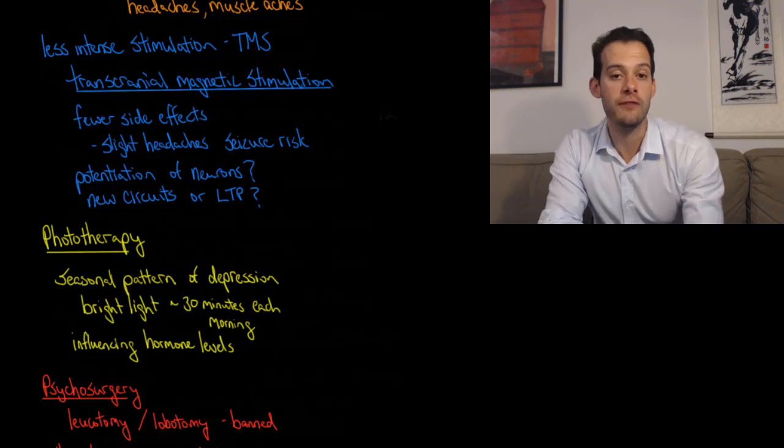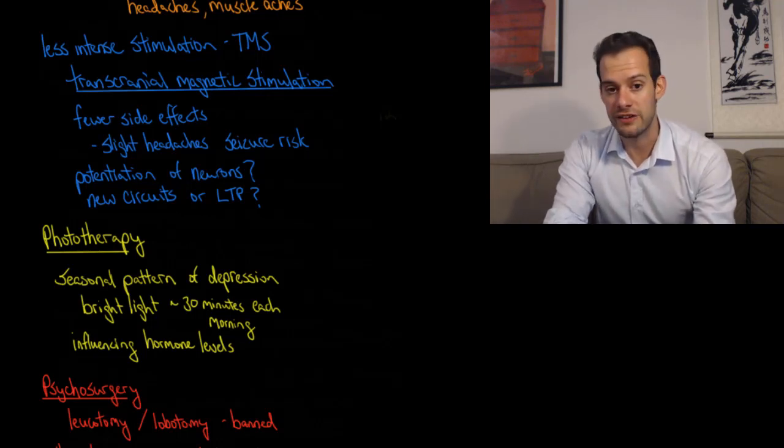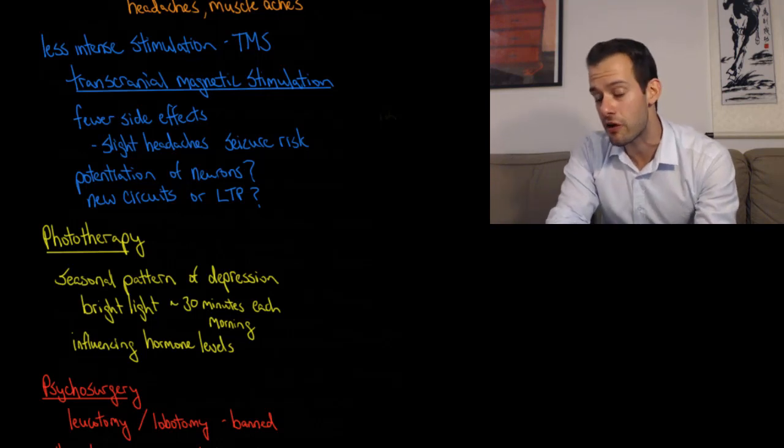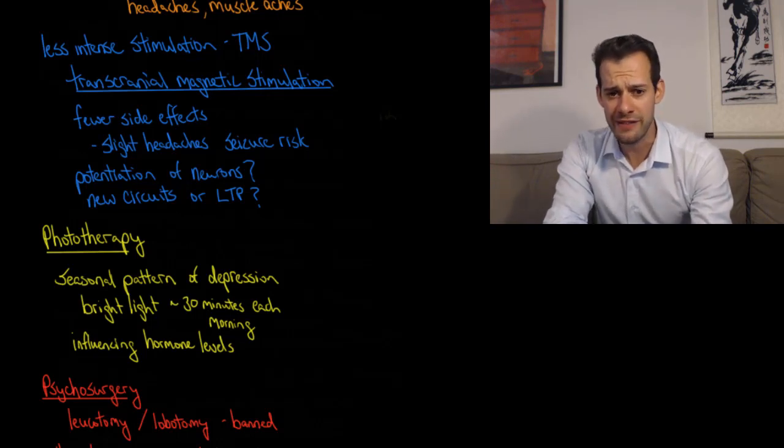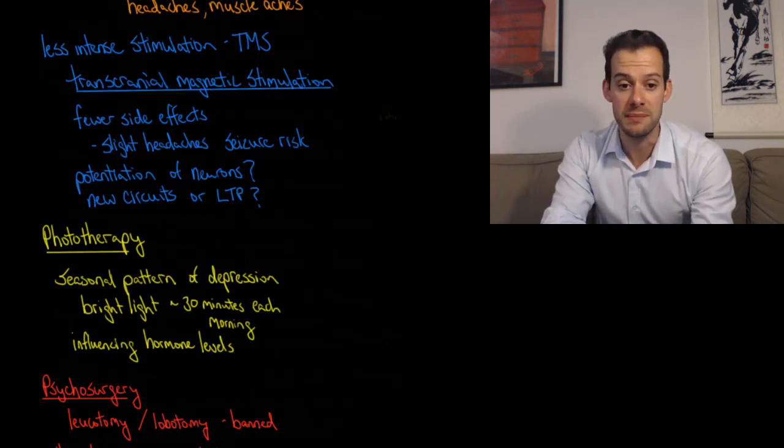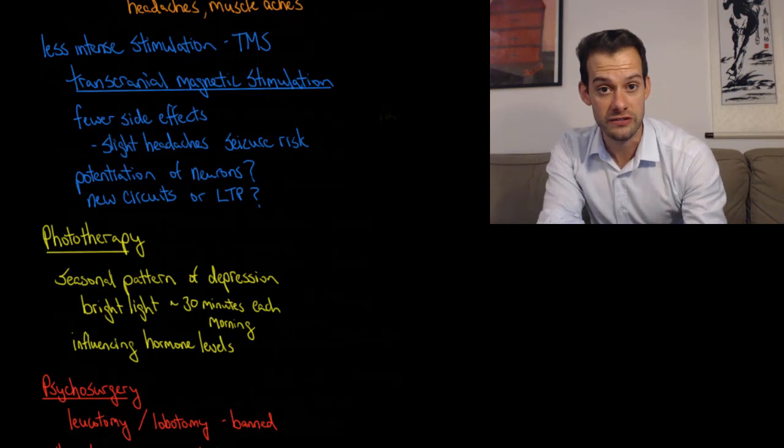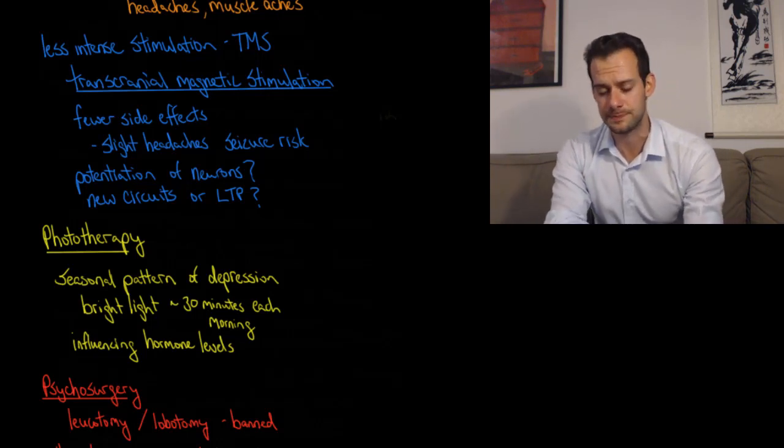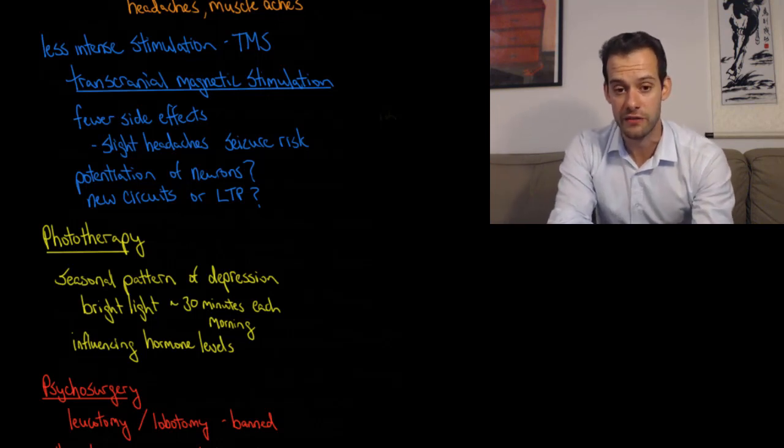We can see that this can be effective for treating certain types of disorders like depression. Again, even when it is effective, we don't fully understand why. One idea is this is changing the potentiation of certain neurons, making it easier or more difficult for them to fire, and this may be helping to regulate certain aspects of mood. It could be the case that the stimulation is helping to form new circuits in the brain, or this might be related to long-term potentiation.